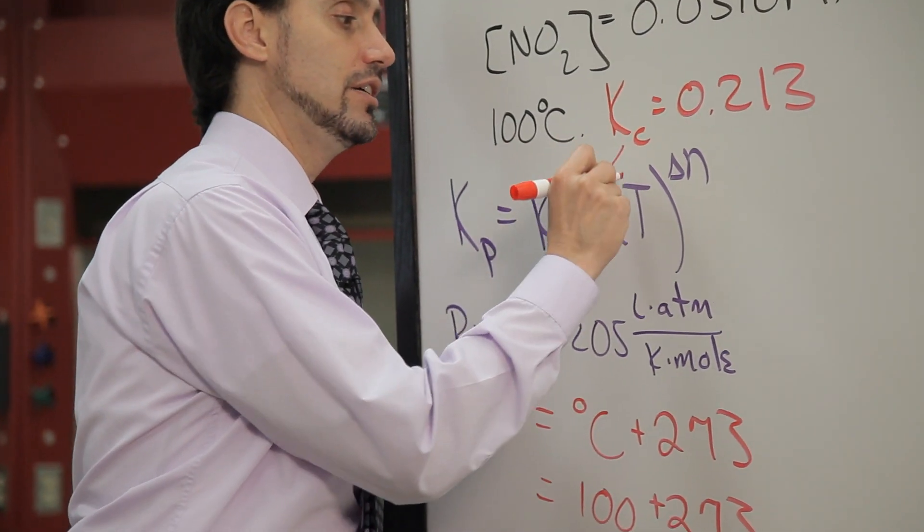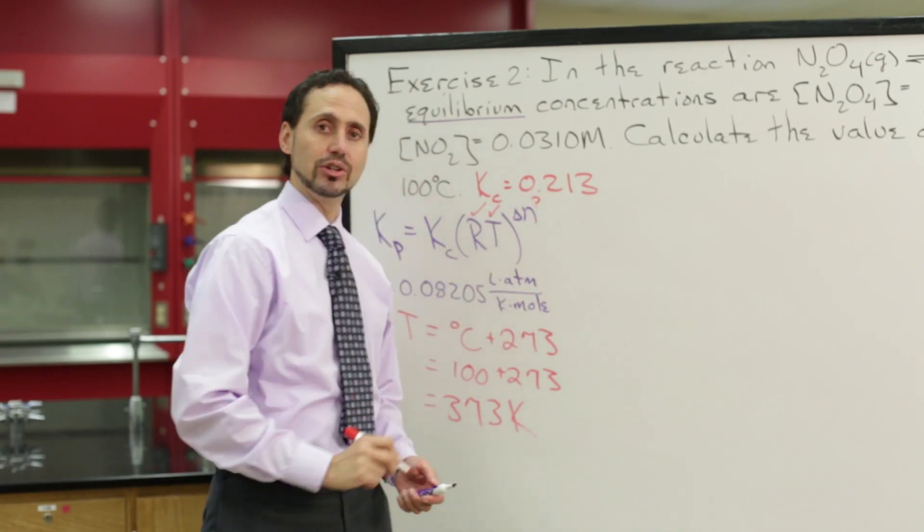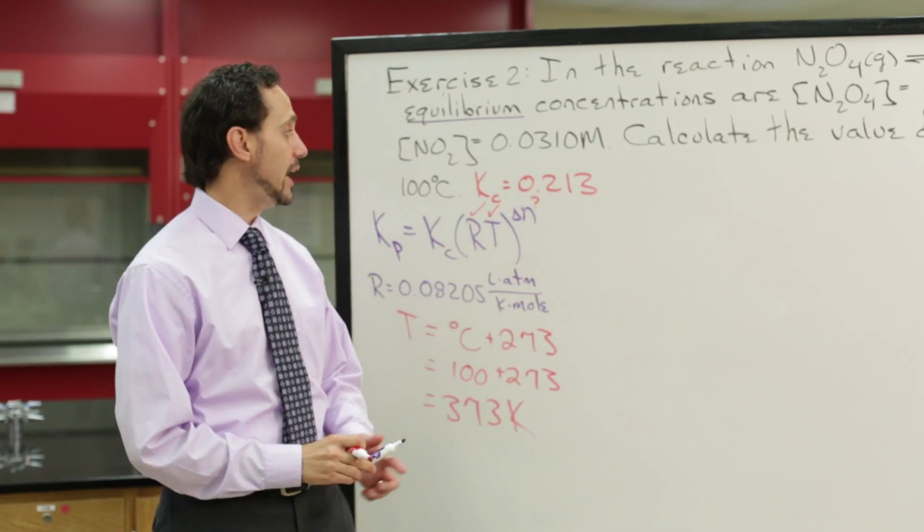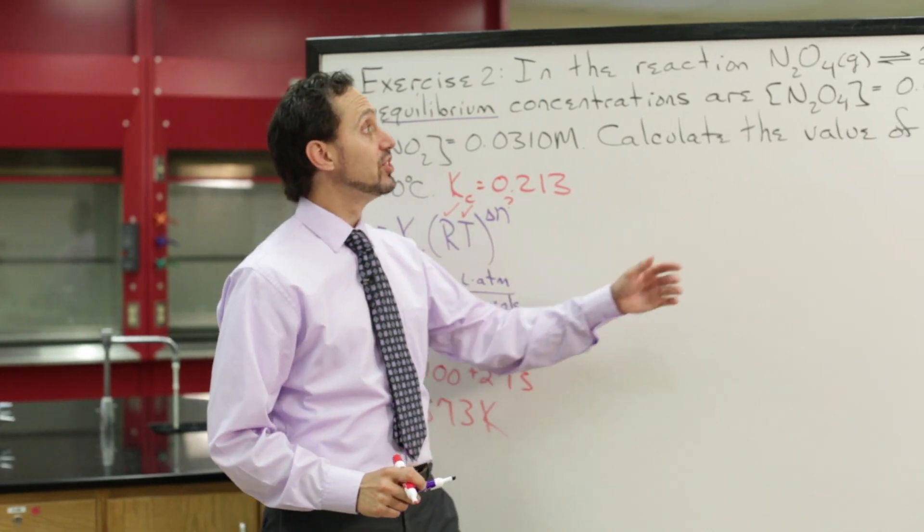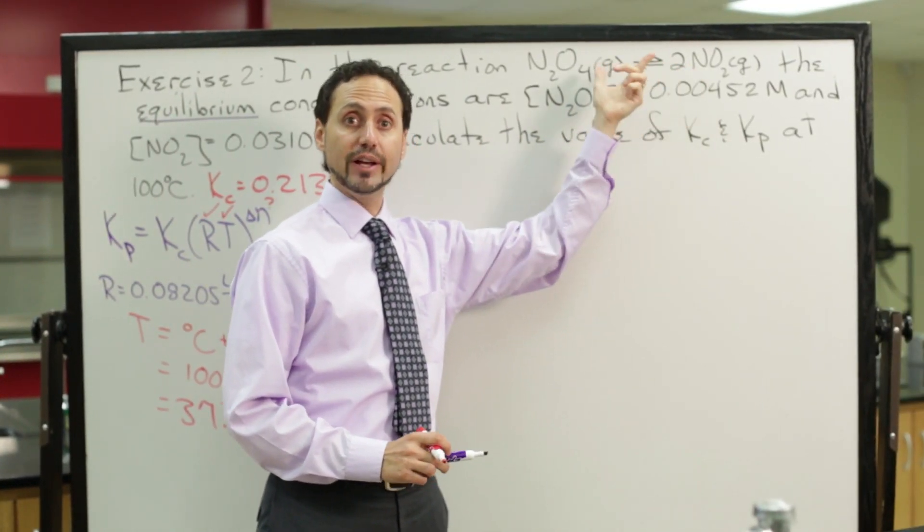So now we have R and we have T. What is delta n going to be in this situation? Again, delta n is the change in the number of moles between the products and the reactants.